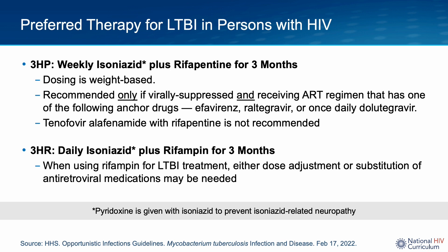Shifting to the 3-HR regimen — daily isoniazid and rifampin for three months — rifampin is notorious for drug interactions due to its ability to induce cytochrome P450 enzymes. One needs to be mindful of this when pairing the LTBI regimen with a suitable antiretroviral regimen. Rifampin use is not recommended in persons receiving protease inhibitors, cabotegravir, bictegravir, elvitegravir-cobicistat, rilpivirine, doravirine, among many others. Clinicians can refer to drug interaction tables in the OI guidelines for further details. Finally, in any regimen that uses isoniazid, pyridoxine (vitamin B6) should also be provided to avoid isoniazid-related peripheral neuropathy.